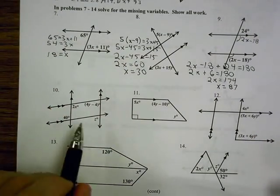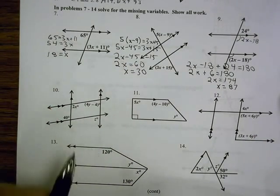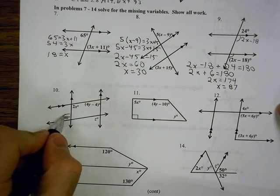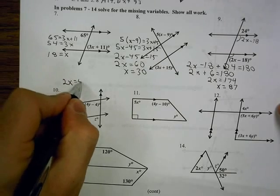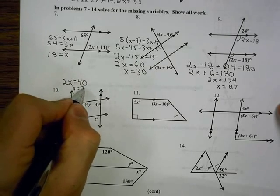Moving down, we're actually finding x, y, z at number 10. First thing I can find is x, because I have these two are alternate interior, so 2x equals 40, so x is 20.